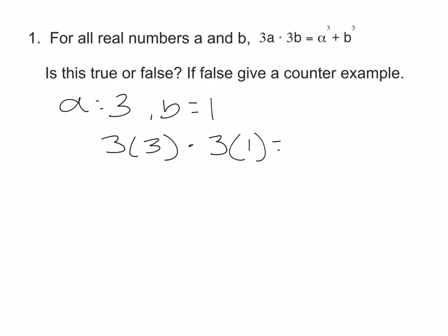3 times 3 times 1 equals, so a to the third, that would be 3 to the third, plus b to the third, that's 1 to the third power.